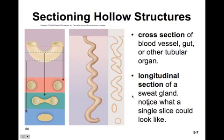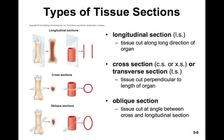A longitudinal section of a sweat gland, for example, could look unrecognizable to a naive eye — but after some practice you can begin to visualize these things more clearly. There are various types of tissue sections: longitudinal sections, cut along the direction of the organ; cross-sections or transverse sections, cut perpendicular to the length; and oblique sections, cut at an angle somewhere between cross and longitudinal. This variety of cut angles adds to the challenge of interpreting histology slides.